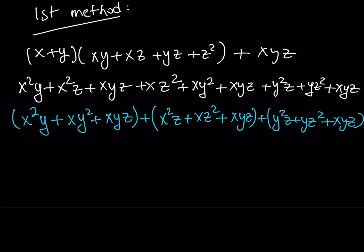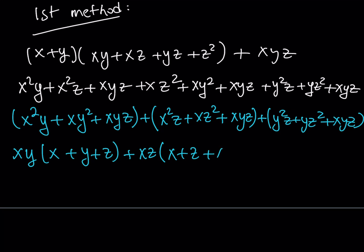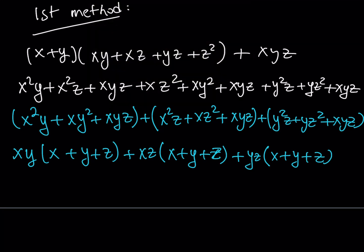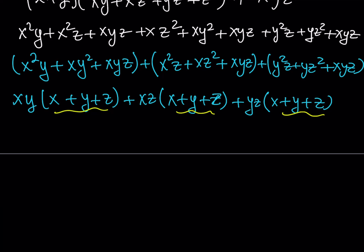Notice that in each group we do have a common factor. For the first one it will be XY, so we can write it as XY times X plus Y plus Z. For the second group it's going to be XZ, so if I take out an XZ it's going to be X plus Y plus Z. And then for the last group, I can take out a YZ, and I should be getting X plus Y plus Z. Now notice that we do have X plus Y plus Z as a common factor, which means we can pull it out. So the result is going to be XY plus XZ plus YZ, all multiplied by X plus Y plus Z.